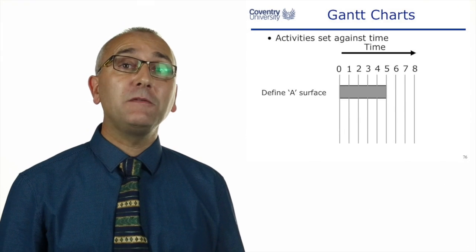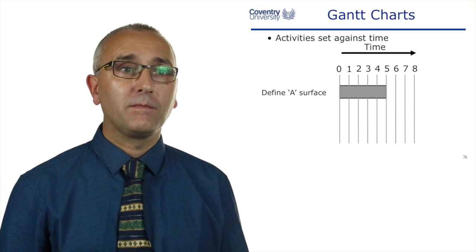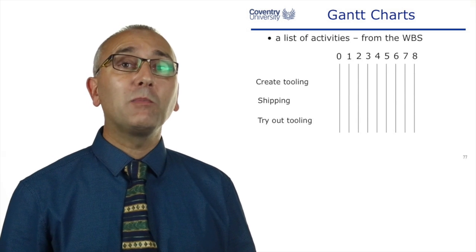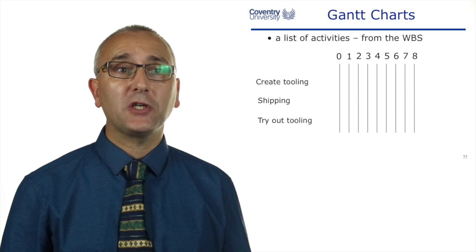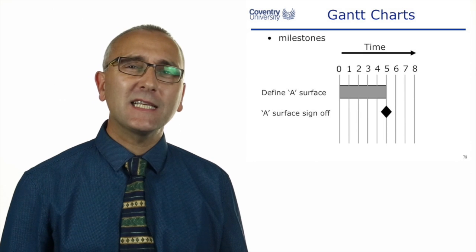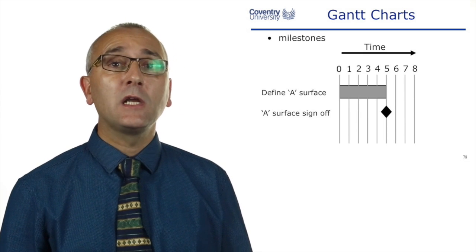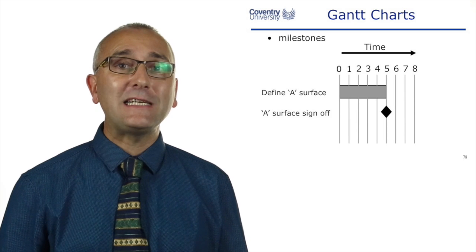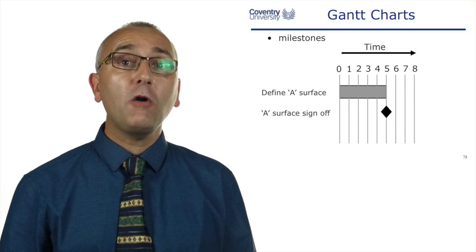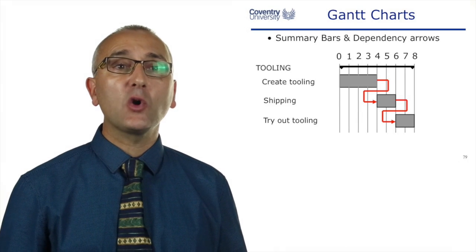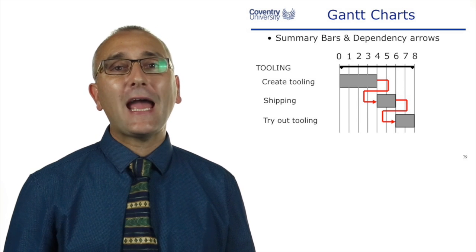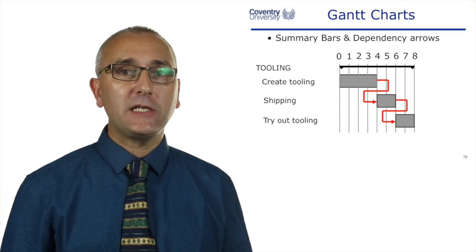We set our activities against some sort of time scale. We have a complete list of activities from the work breakdown structure. We can add milestones — these key decision points. In Microsoft Project, a milestone is an activity of zero duration, often represented by a diamond. We can add summary bars or work package headings, and we can add our dependency lines.